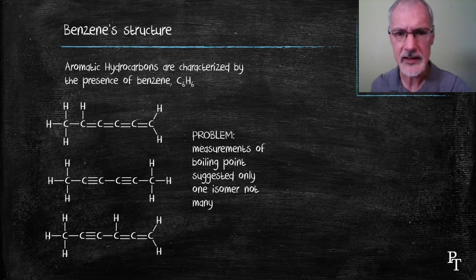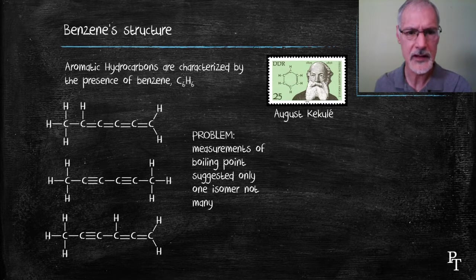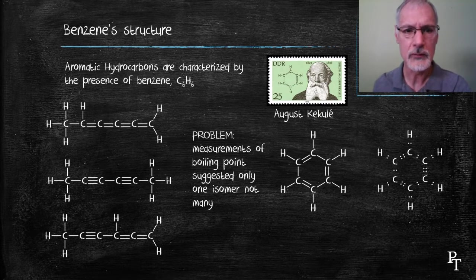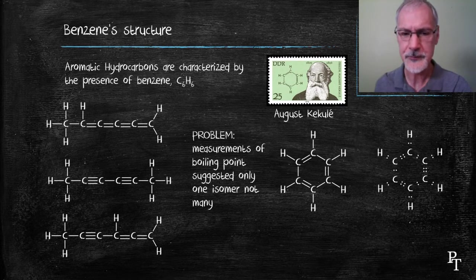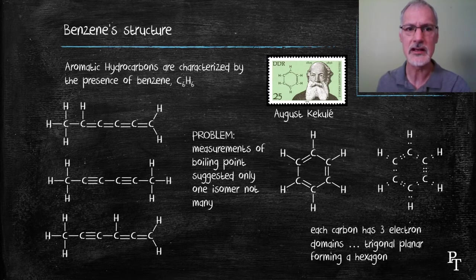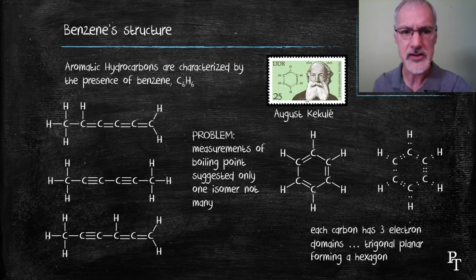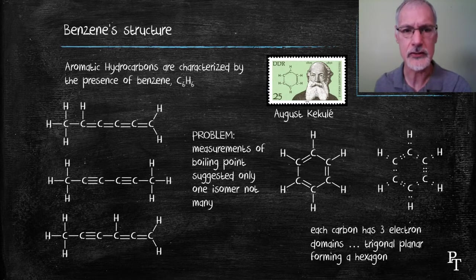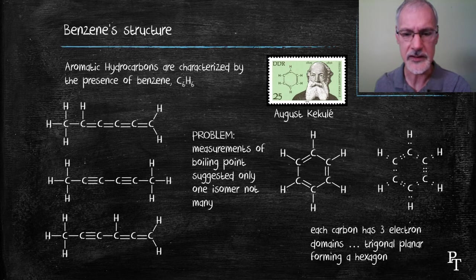Auguste Kekulé in the 1850s came up with a solution to the problem. He placed benzene in a ring with alternating multiple bonds. Examination of those carbons indicates that they each have three electron domains, and from the shapes of molecules, we know that makes a trigonal planar structure with angles of 120 degrees.